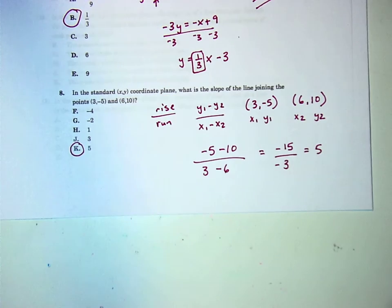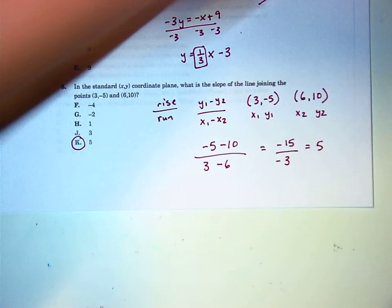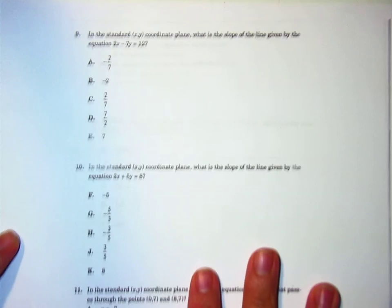Negative 15 divided by negative 3 is a positive 5. So, the slope is k, positive 5. Halfway there.